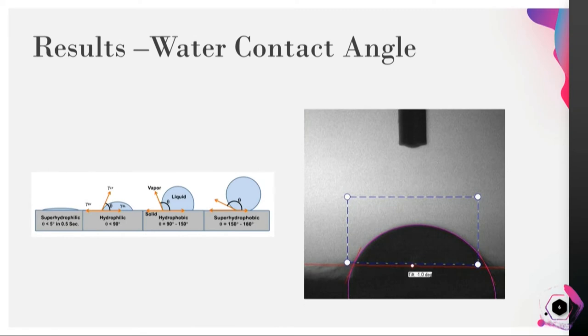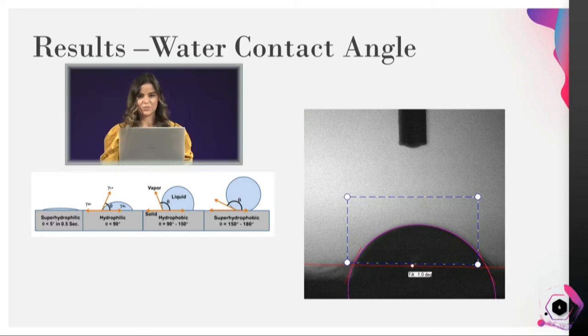My second test was a water contact angle test. This test measures how much a surface can absorb a liquid, in this case water. The picture on the left shows the schema that I used to determine if my nanofiber was hydrophobic, meaning it wouldn't absorb water, or hydrophilic if it would absorb water. The left side shows a superhydrophilic characteristic that has an angle of less than 5 degrees that could be achieved in 0.5 seconds.